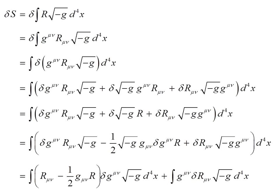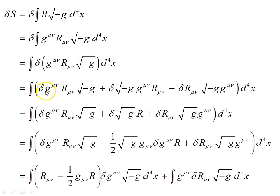Delta S is the variation of that integral. The Ricci scalar R can be written in terms of the Ricci tensor R_μν times the inverse metric g^μν. Bringing the delta inside the integral sign and applying the product rule (Leibniz rule), we get the variation of the inverse metric times all remaining terms, plus the variation of the metric determinant times that, and finally the variation of the Ricci tensor times all that.